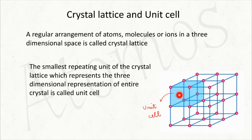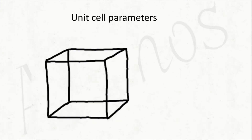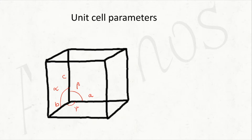The unit cell will not be the same in all crystalline solids — it will be different. Why are unit cells different? It depends upon certain cell parameters. Cell parameters include three edges: edge length a, edge length b, and edge length c. The type of unit cell also depends upon the angles between them: the angle between a and c is beta (b is missing), the angle between b and c is alpha (a is missing), and the angle between a and b is gamma.